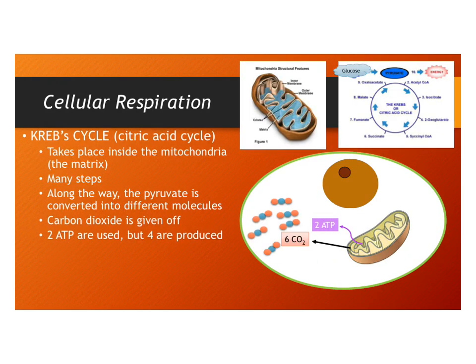The second step of cellular respiration is called the Krebs cycle, also called the citric acid cycle. This takes place in the mitochondria — specifically inside the empty spaces called the matrix of the mitochondria. There are many steps involved which you don't have to learn. Along the way, pyruvate is converted many times into different molecules, carbon dioxide is given off, and you end up using two ATP but gaining four, so you get two ATP net out of the Krebs cycle.